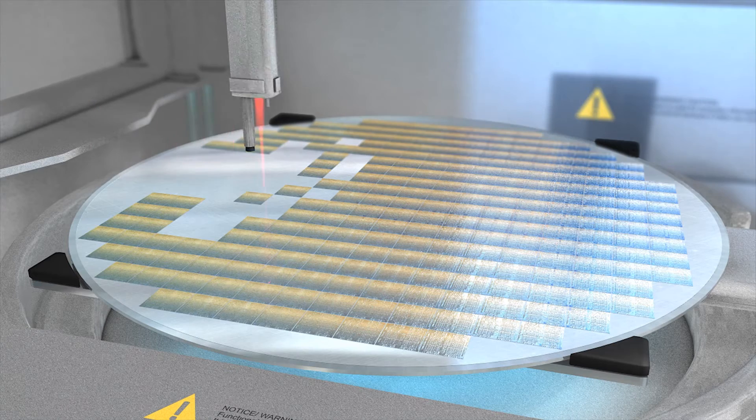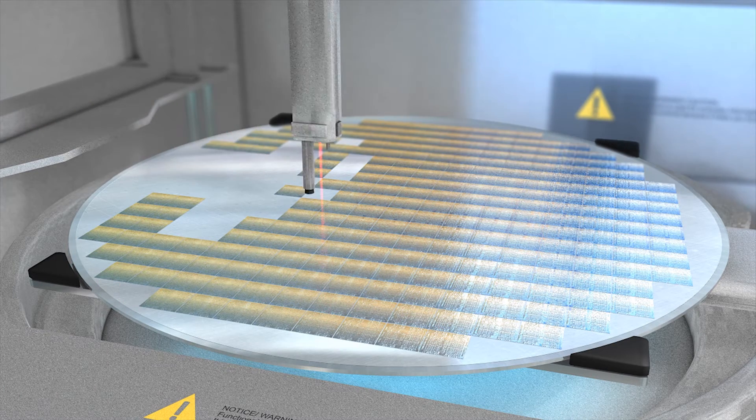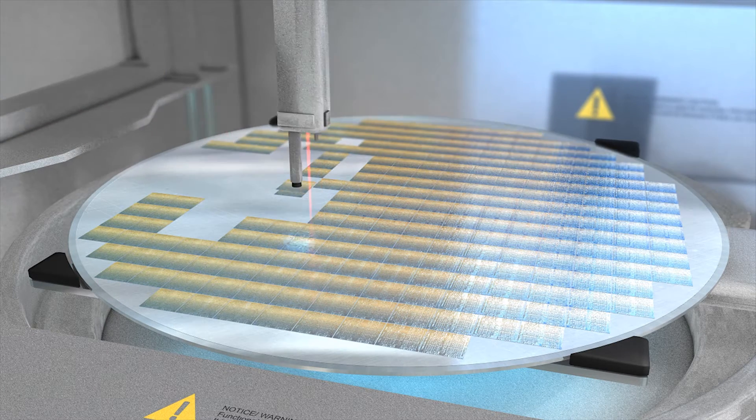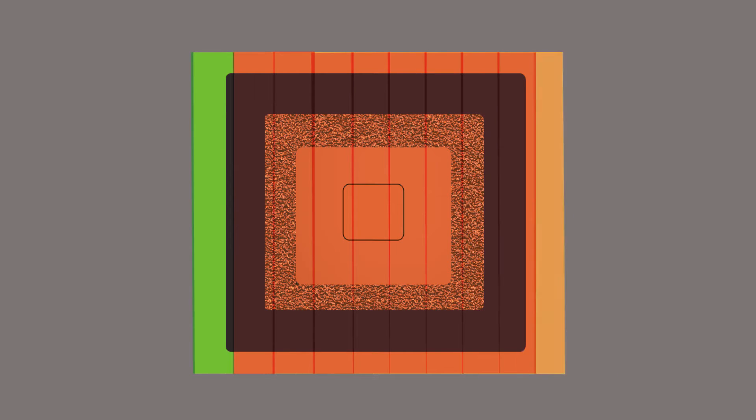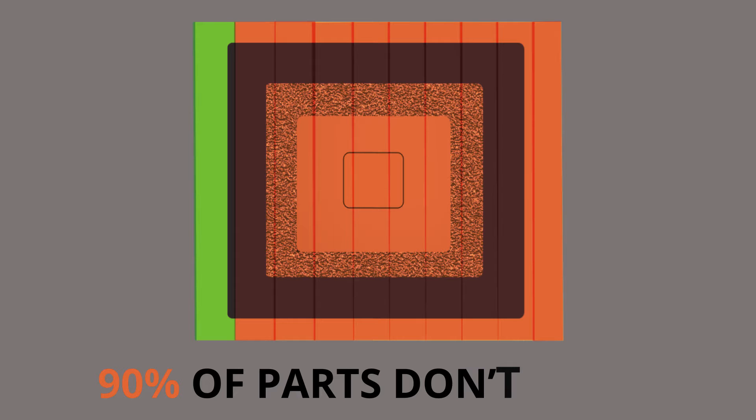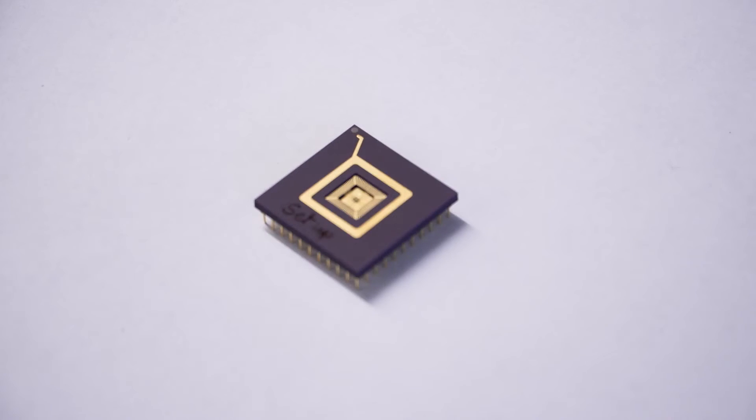I work in the area of integrated circuit manufacturing, design, and test. When integrated circuits are fabricated, they're typically fabricated in a very complex foundry, or fab as we call them. Unfortunately, when we fabricate these circuits, they don't always work. There's a yield that can range from 10 to 80 percent, meaning that up to 90 percent of parts that you fabricate don't work. I do research in the area of how you detect these defects in these chips.